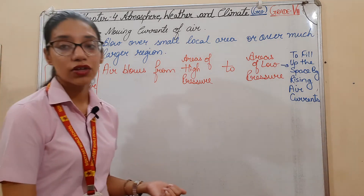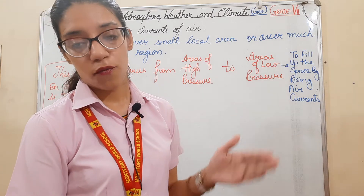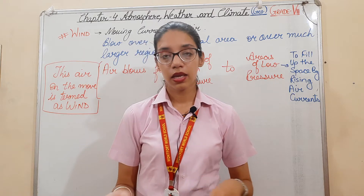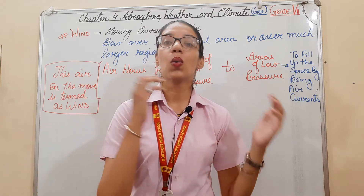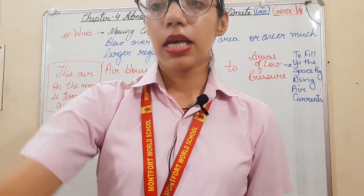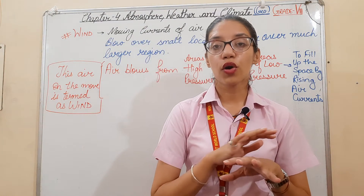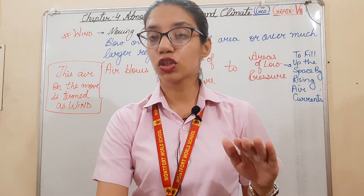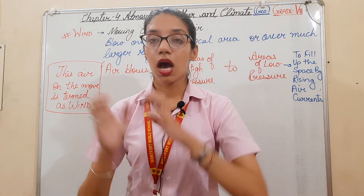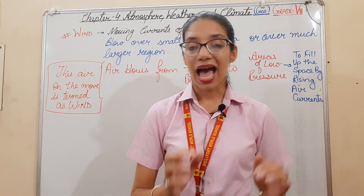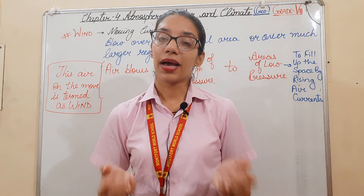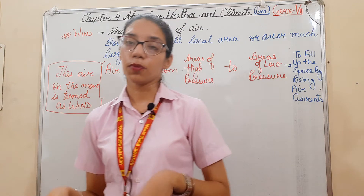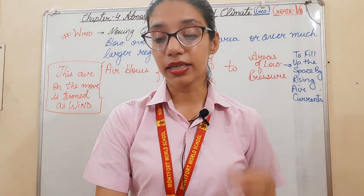A wind is named after the direction from which it blows. For example, wind blowing from the east is known as easterly; from the west, it is known as westerly. Global winds help moderate temperature throughout the world by carrying warm air away from the tropics and cold air away from the poles.